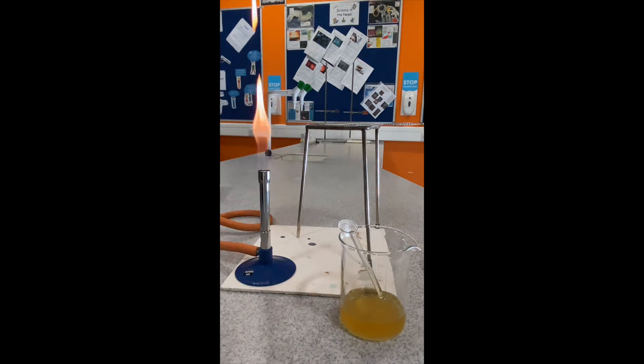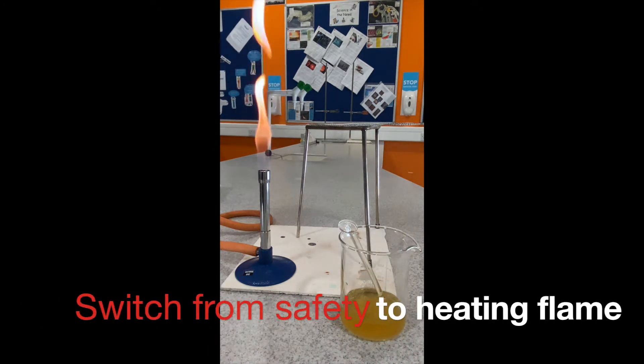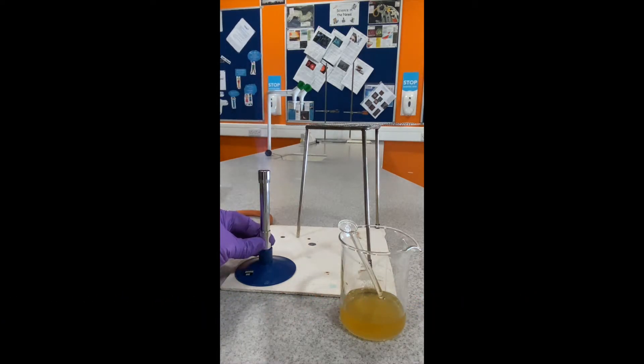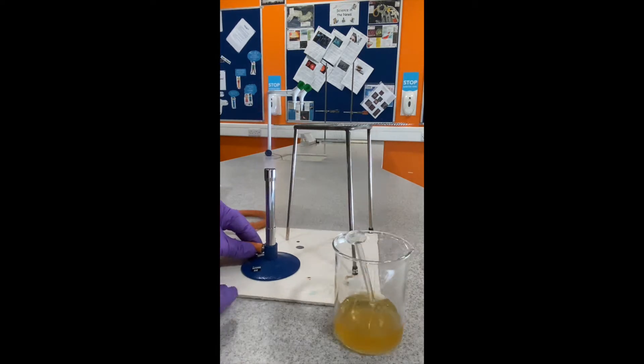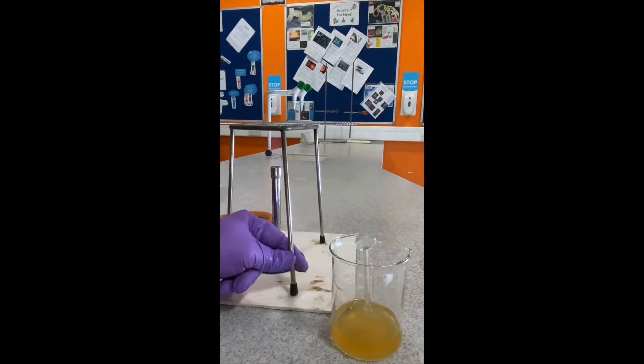Always light the Bunsen burner in clear view. Before moving the Bunsen burner underneath the tripod to heat the liquid, open the collar of the Bunsen burner to produce the blue heating flame.